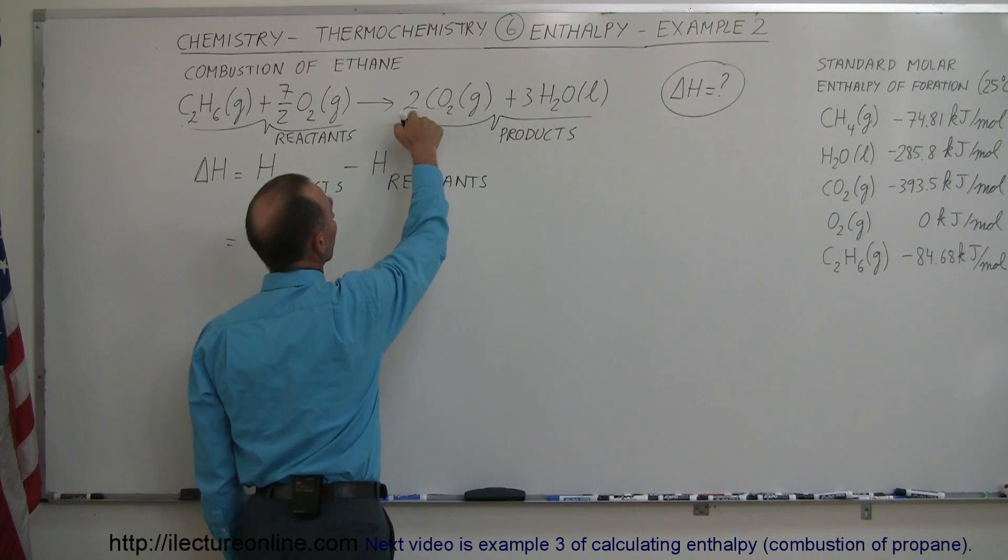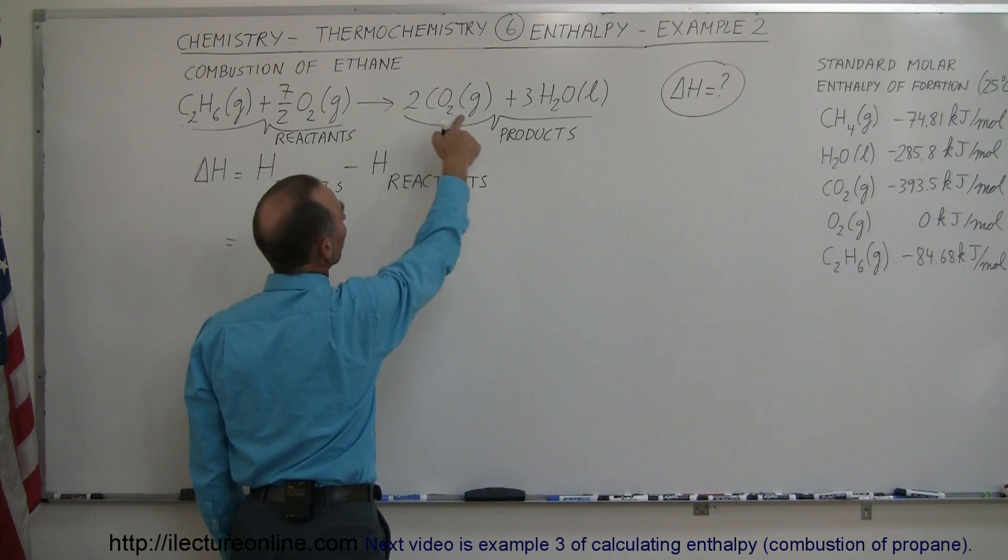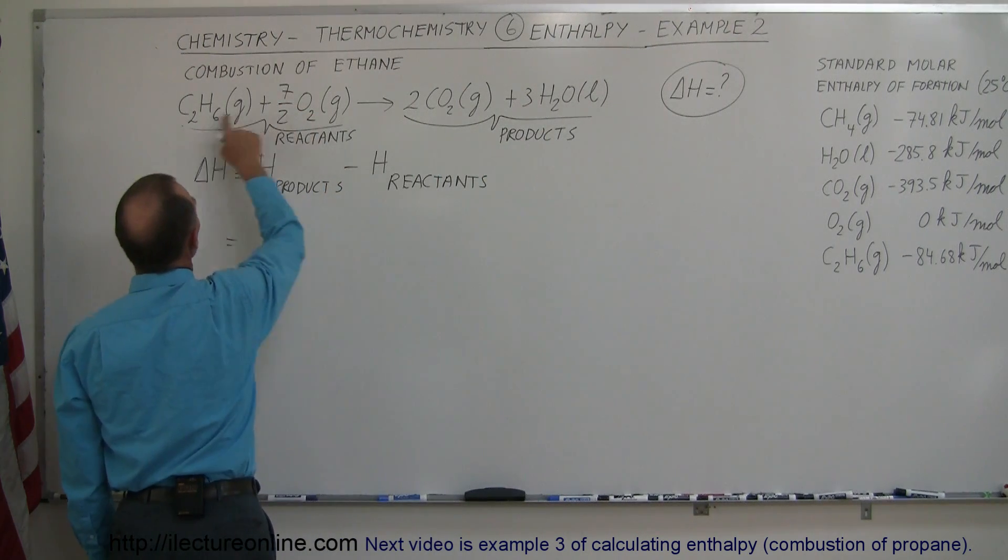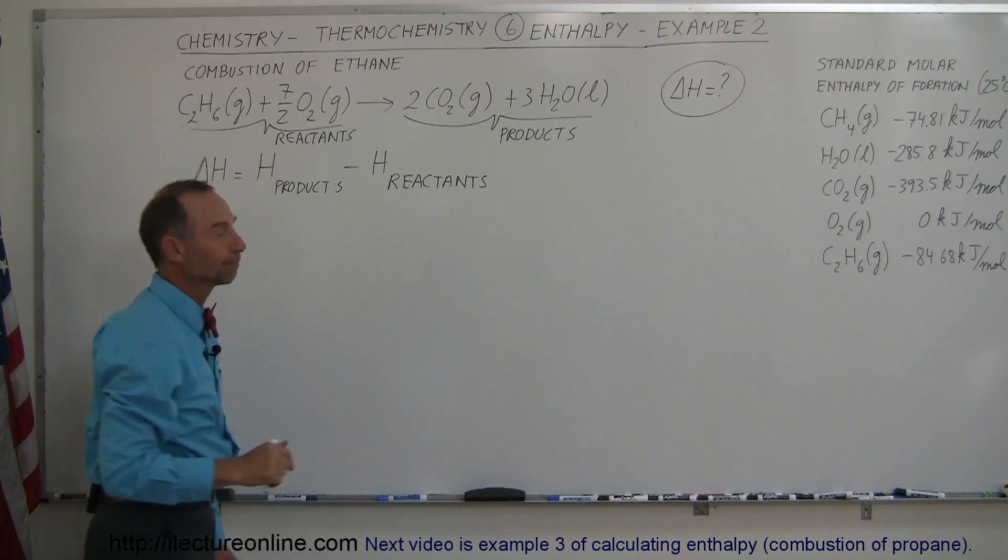Let's start with carbon dioxide. Notice we have two moles in this equation. We have two moles of carbon dioxide, three moles of water, three and a half moles of oxygen, and one mole of ethane.